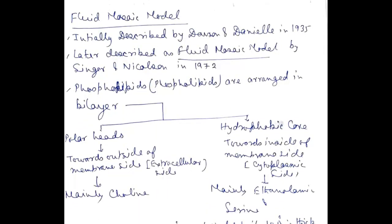Initially, Plasma Membrane was described by Davson and Daniel in 1935. Later it was described as the Fluid Mosaic Model by Singer and Nicholson in 1972.